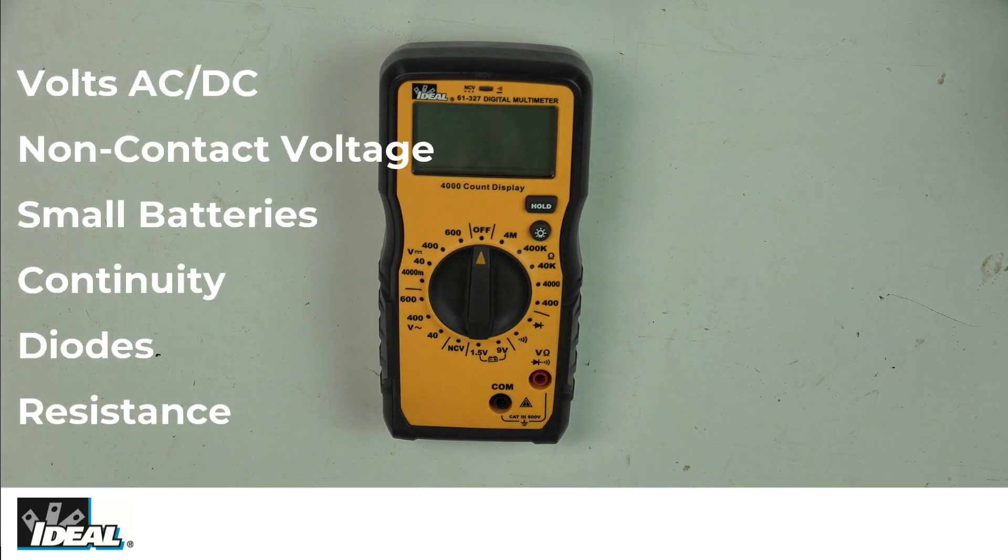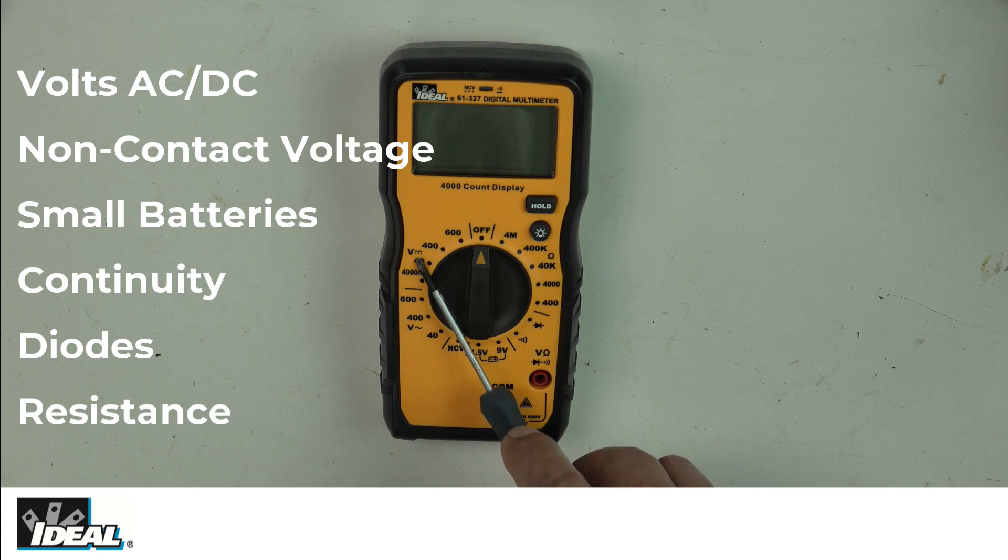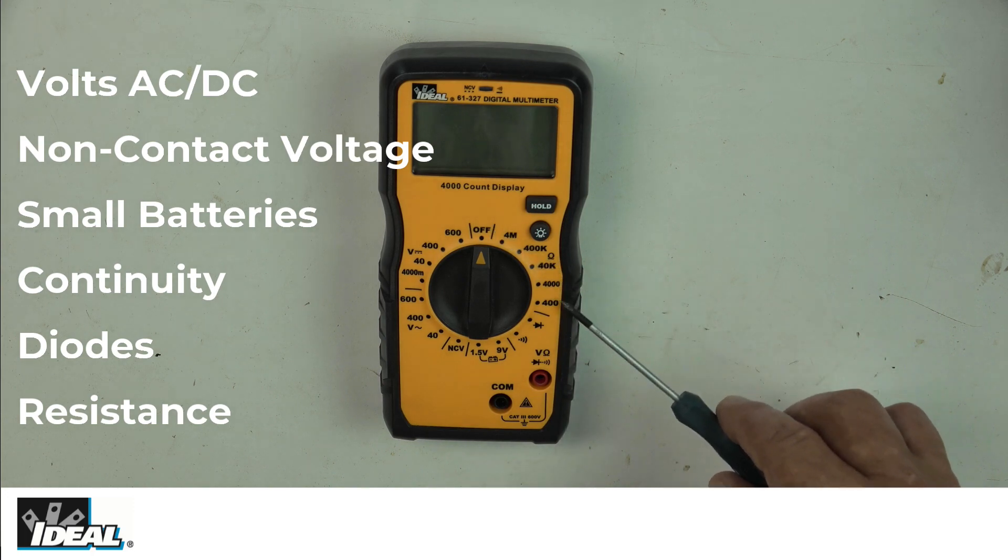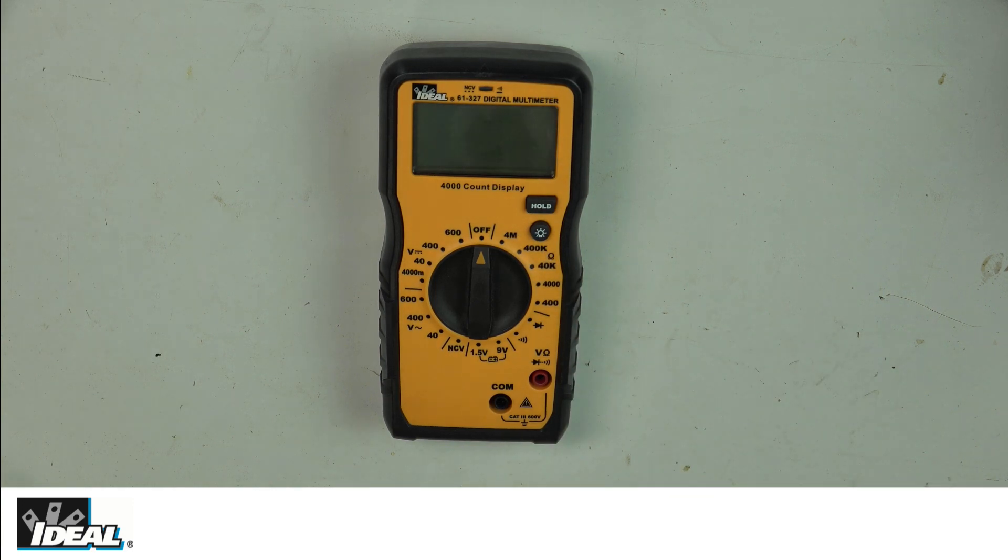I'll point out the different functions of the tester. Over here is volts DC with ranges of 4000 millivolts, 40 volts, 400, and 600 volts DC. For AC, we see 40 volts, 400, and 600 volts as ranges. The tester has non-contact voltage sensing capabilities. There are settings for small 1.5 or 9 volt batteries. The audible symbol is for continuity when measuring motor windings or switches. That symbol is for a diode. And all of these are for measuring ohms or resistance: 400 ohms, 4000, 40,400, and 4 million ohms.